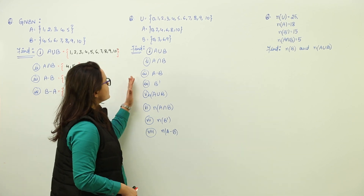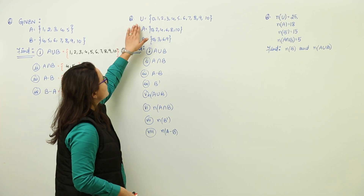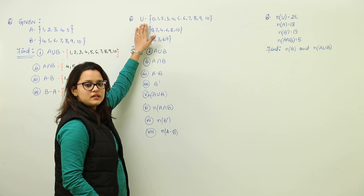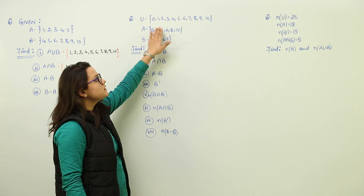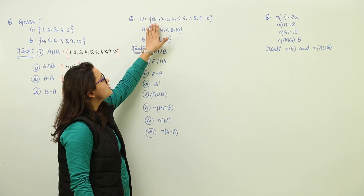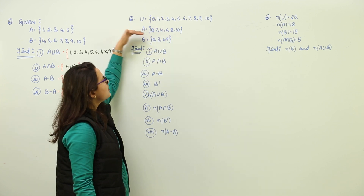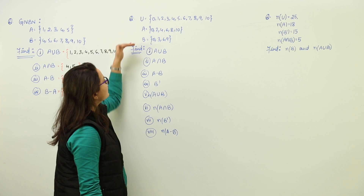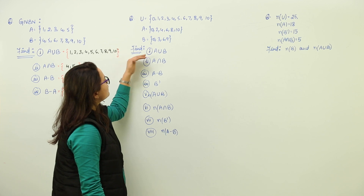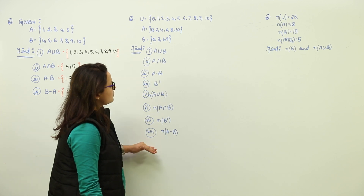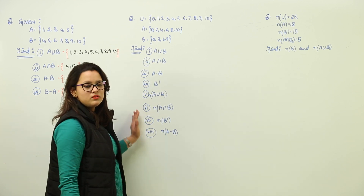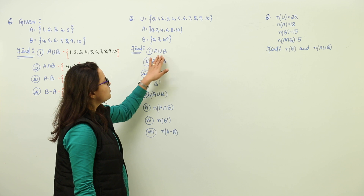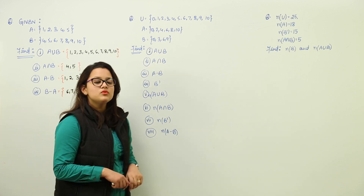Next we have this question where the universal set is represented as U. We have set A and we have set B. We have to find the values for these respective questions. First is A union B.